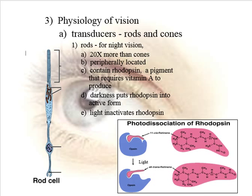That starts the series of chemical reactions that eventually allow us to see light. So the change from the cis to the trans form causes an impulse. Getting it back to the cis form takes a fair amount of time — to get it dark sensitized, or dark adapted.